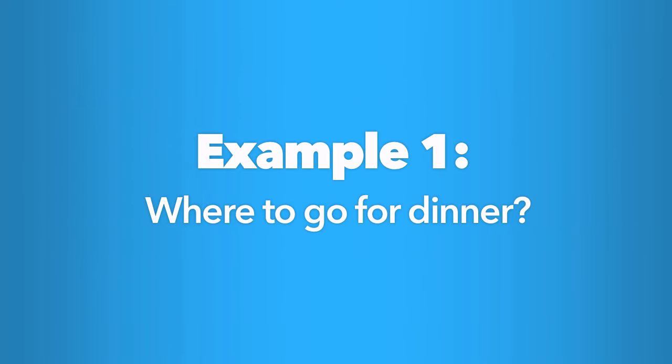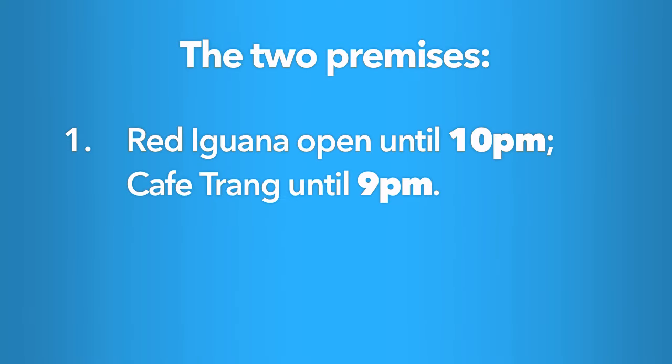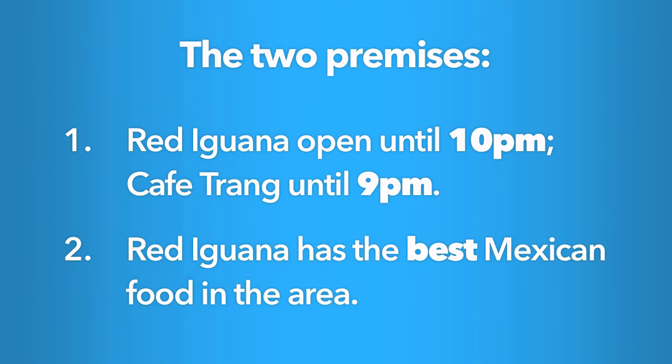In the first example, the problem is that you and some friends are trying to decide where you should go for dinner — the Red Iguana or Cafe Trang. There are two premises. One, Red Iguana is open until 10pm and Cafe Trang is only open until 9. And two, the Red Iguana has the best Mexican food in the area.